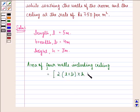Twice of length plus breadth into height is the area of the 4 walls and length into breadth would be the area of the ceiling. So area of 4 walls along with the ceiling would be sum of these two.